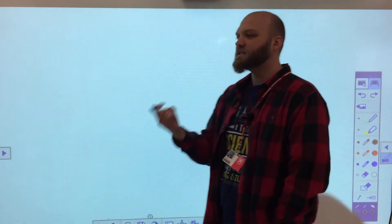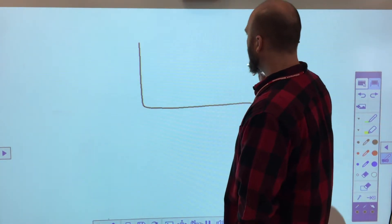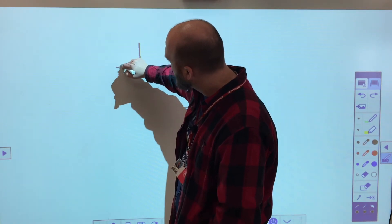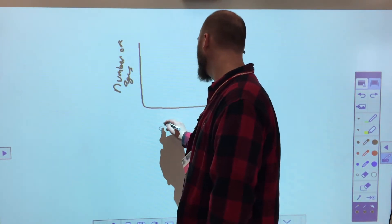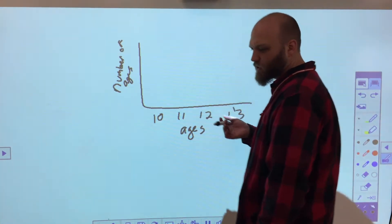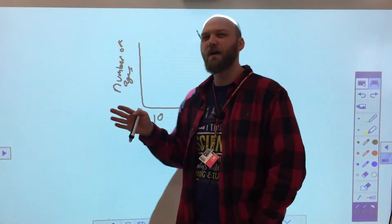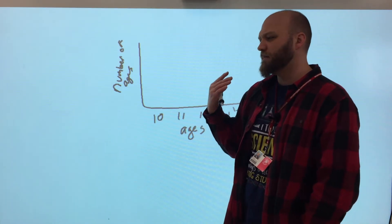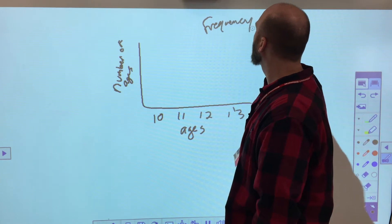When I'm looking at something that's a dot plot or a frequency graph, I'm going to represent the number of times something happens. So let's say the number of 12-year-olds — we'll say ages. I would put ages down here: 10, 11, 12, 13. Frequency means how often something occurs.